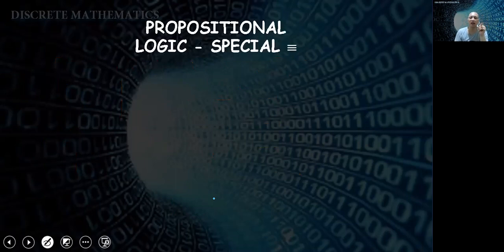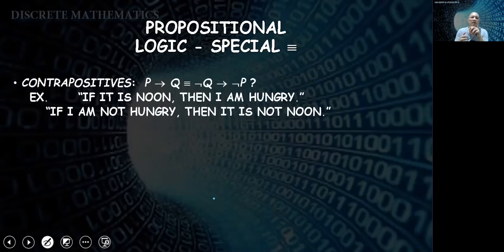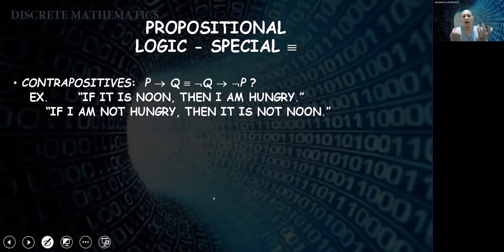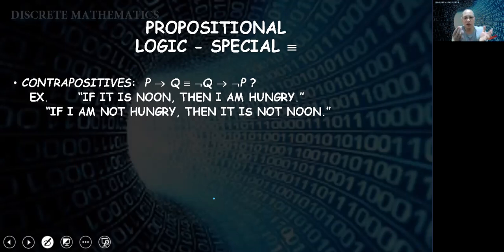Let's look at some special propositional logic equivalences. The contrapositive: 'if P then Q' is equivalent to 'if not Q then not P.' For example, P is 'it is noon' and Q is 'I am hungry.' So 'if it is noon, then I am hungry' has the contrapositive 'if I am not hungry, then it is not noon.' This makes logical sense — if it being noon implies hunger, then not being hungry implies it's not noon.